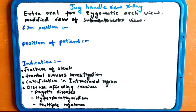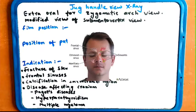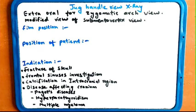The indications of the jug handle view X-ray — where you can use this X-ray: when there is a fracture of the skull, when there is a frontal sinus investigation, and when there is calcification in the intracranial region. It is also used for diseases affecting the cranium — Paget's disease, hyperparathyroidism, and multiple myeloma. These are the indications of the jug handle view X-ray.